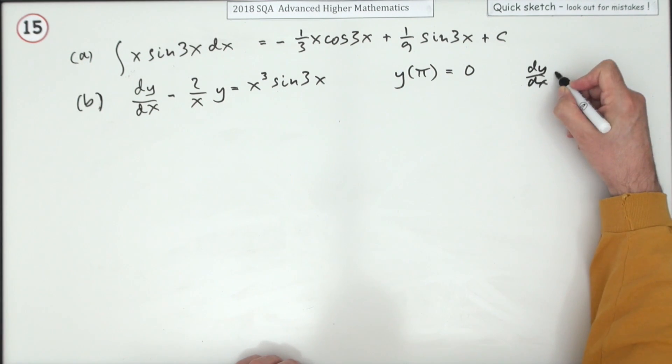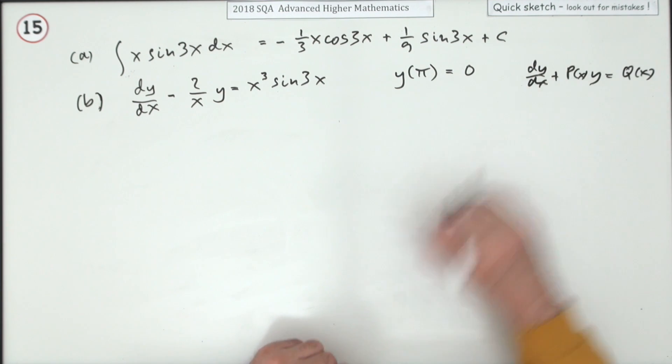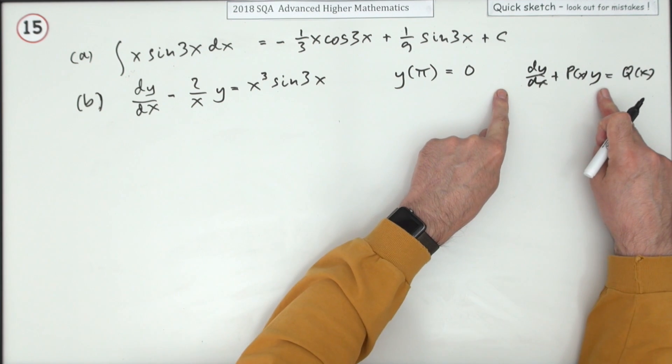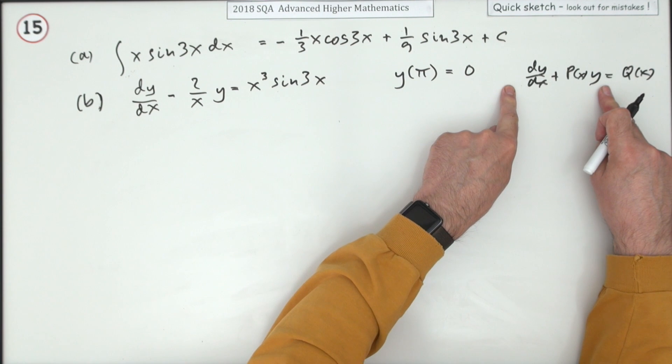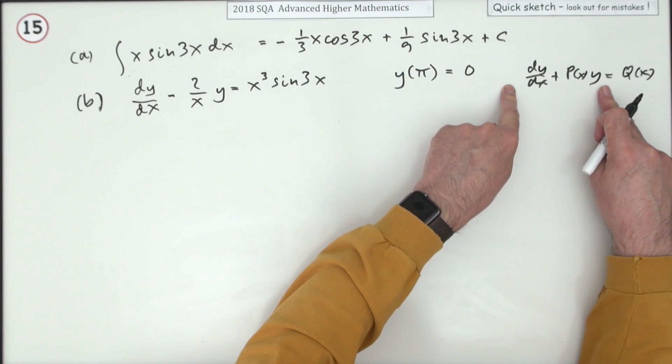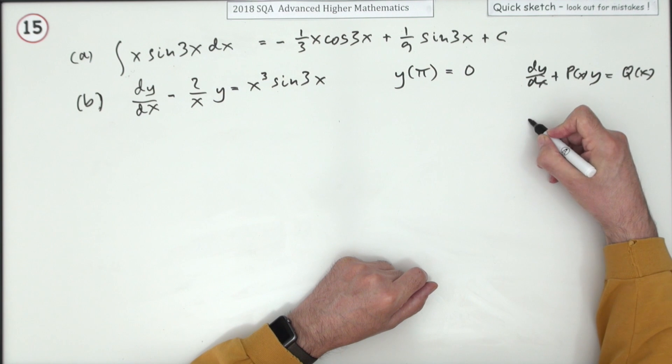When it's in that form and it's been reduced to standard form - dy/dx plus some function of x times y equals some other function of x - this side can be resolved by multiplying everything by whatever it takes to form the result for the exact use of the product rule on differentiation. That multiplying factor is e to the integral of whatever that part is.